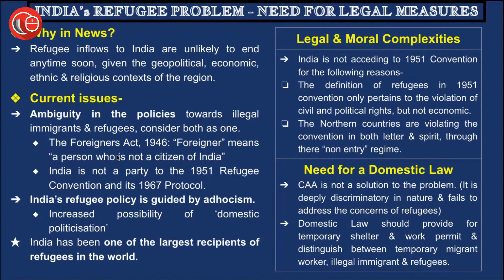According to the Foreigners Act of 1946, a foreigner means a person who is not a citizen of India. India is not a party to the 1951 Refugee Convention and its 1967 Protocol, which makes it difficult to make anything binding upon India. The definition of 'foreigner' is thus twisted and turned several times based on the political relations or agenda of the government. The second issue is that India's current refugee policy is guided by ad hocism — something not permanent, followed as a definition of refugees.